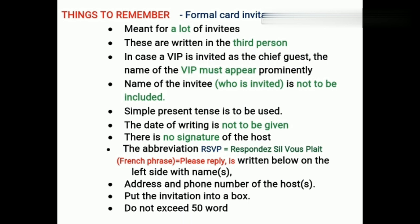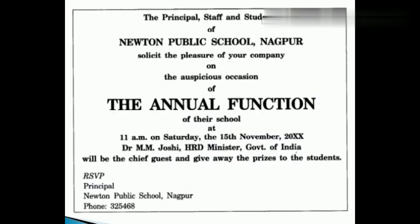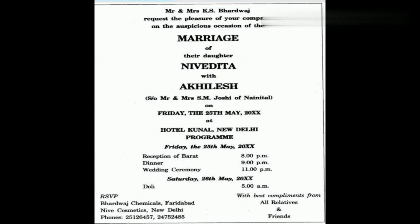Let me show you a few examples. The first one is related to an annual function — it contains the name of the host, polite request, occasion details, and the chief guest, with RSVP at the last. The second example is a marriage card — we add more information: name of the host, polite request, the occasion, bride and groom's details, date, day, time, full address, details about the reception, dinner, wedding ceremony, etc., and then RSVP.